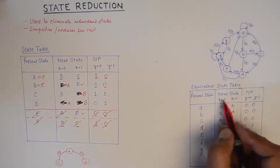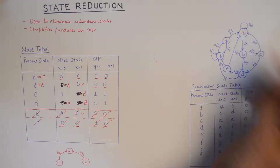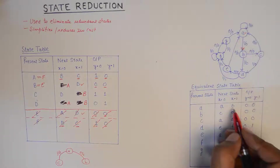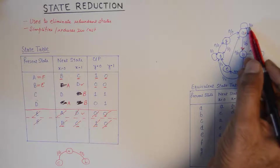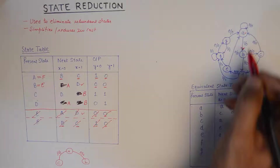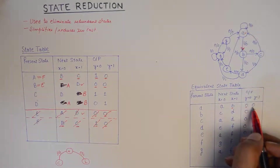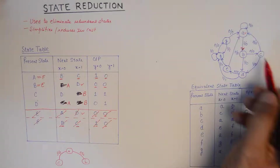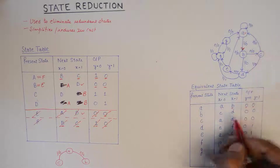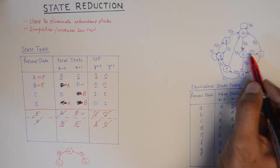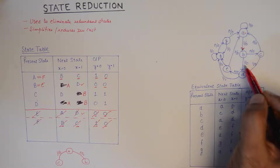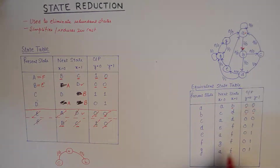When at state A, if we give a 0 we come back to A, and if we give a 1 we go to B. While we give 0 as input the output was 0, and while we give 1 as input the output was also 0. When at B, we went to C upon 0 and to D upon 1, getting output 0 in both cases. You need to be very careful while filling up this table, because if you make a mistake you would not be able to find the redundant states.